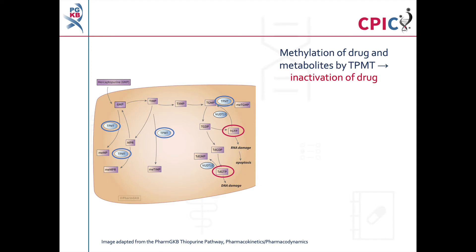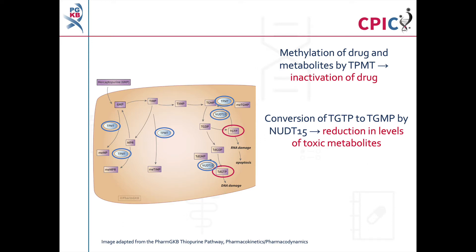The TPMT protein encoded by the TPMT gene inactivates mercaptopurine and several metabolites by methylation, reducing the number of molecules available for conversion into active thioguanine nucleotide metabolites. The NUDT15 protein encoded by the NUDT15 gene converts active thioguanine nucleotide metabolites to inactive thioguanine nucleotide metabolites, reducing the level of cytotoxic active thioguanine nucleotide metabolites.